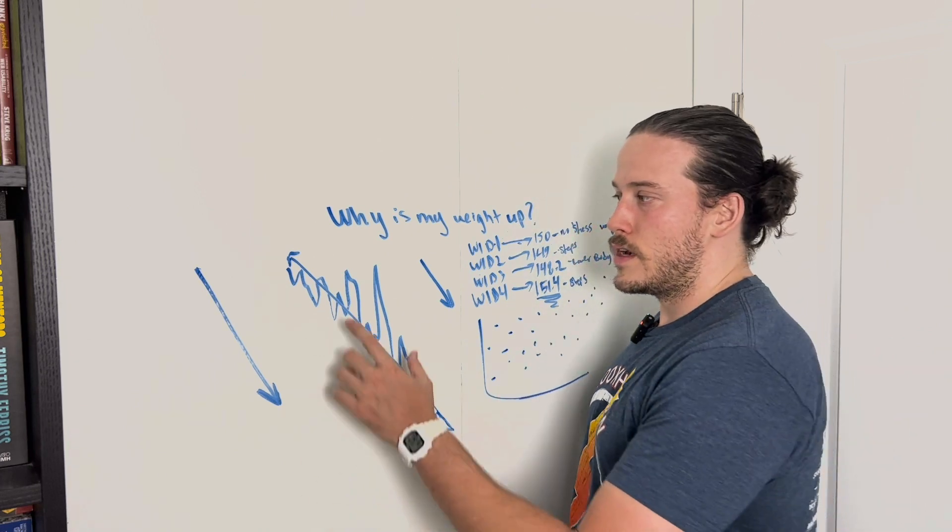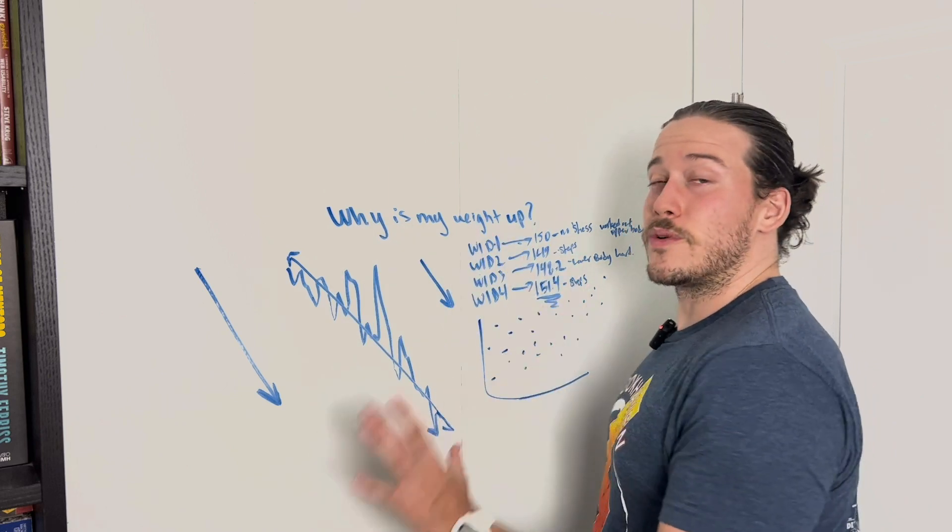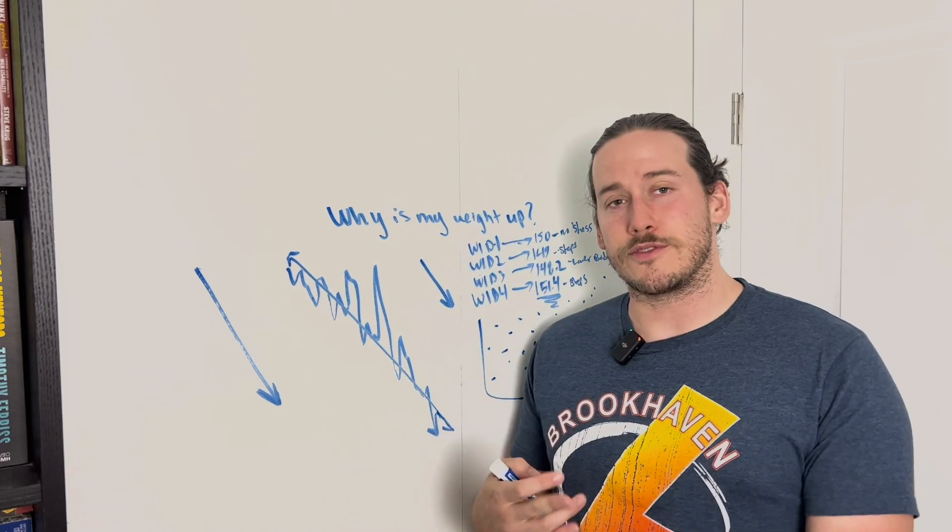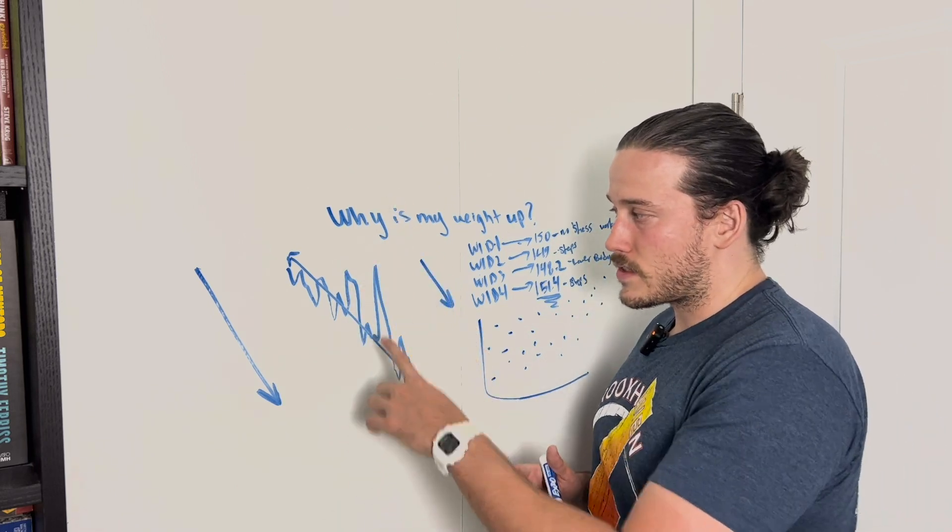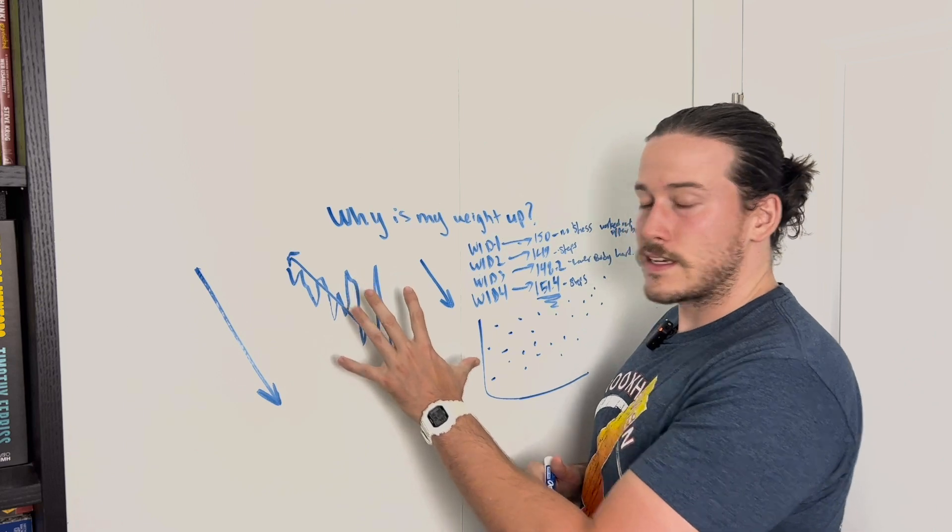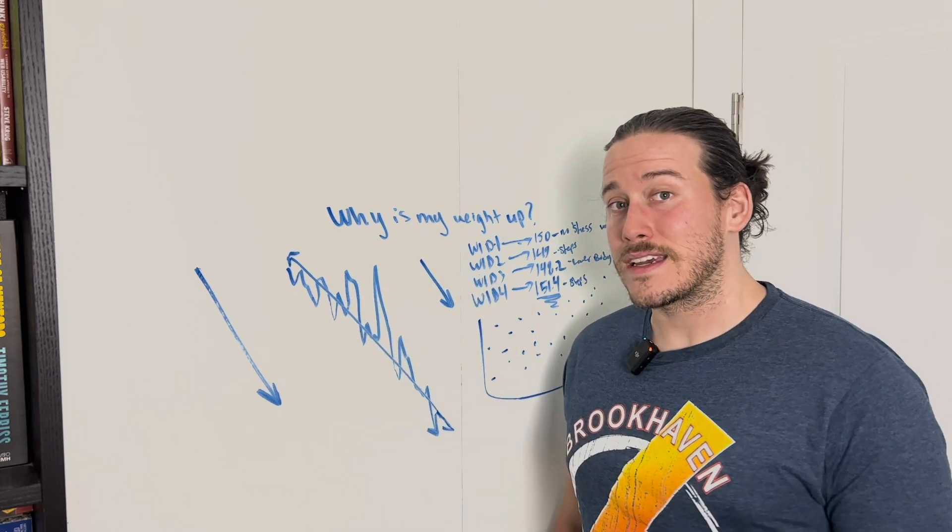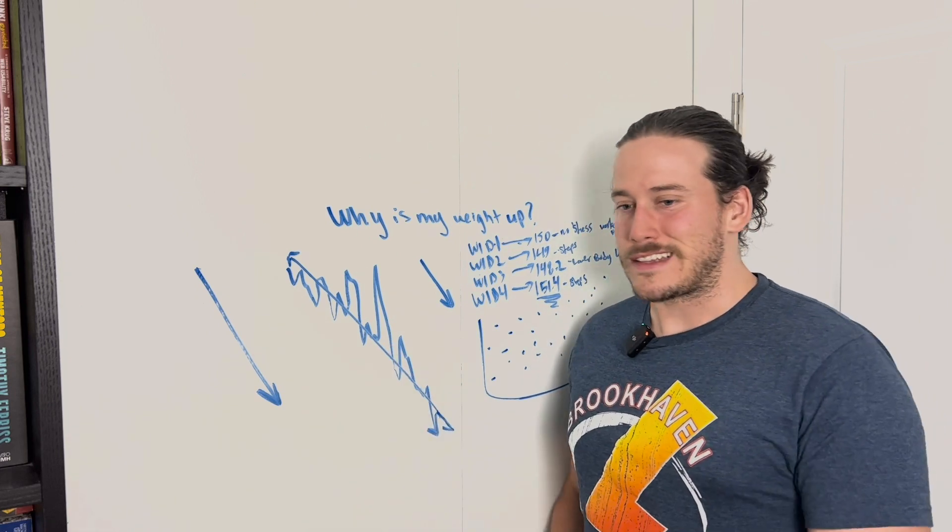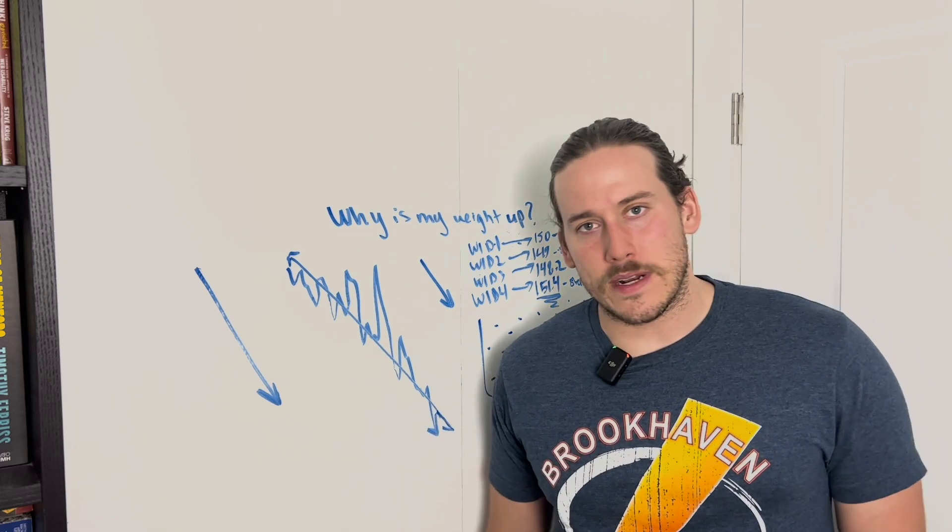And I want you to have the expectation that it's going to happen so that you don't freak out and then jump off the journey because you say it's not working. Because the worst thing that you could do is get here, not be expecting your weight to be up sometimes, even when you're doing everything that you need to be doing. You're still hammering your workouts, you're doing your steps, you're sleeping, you're de-stressing yourself. You're doing what you need to do. Sometimes your weight's going to be up. If you don't expect that to happen at some point, it's going to be very hard to stay on track. Because your expectations are going to lead you to believe that you're not doing what you need to do or that it's just not working.